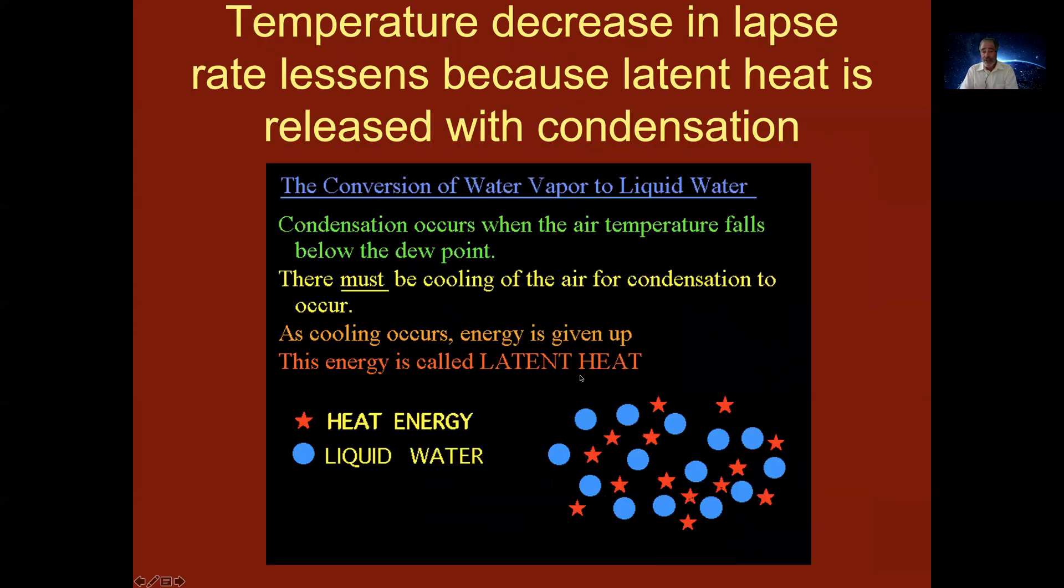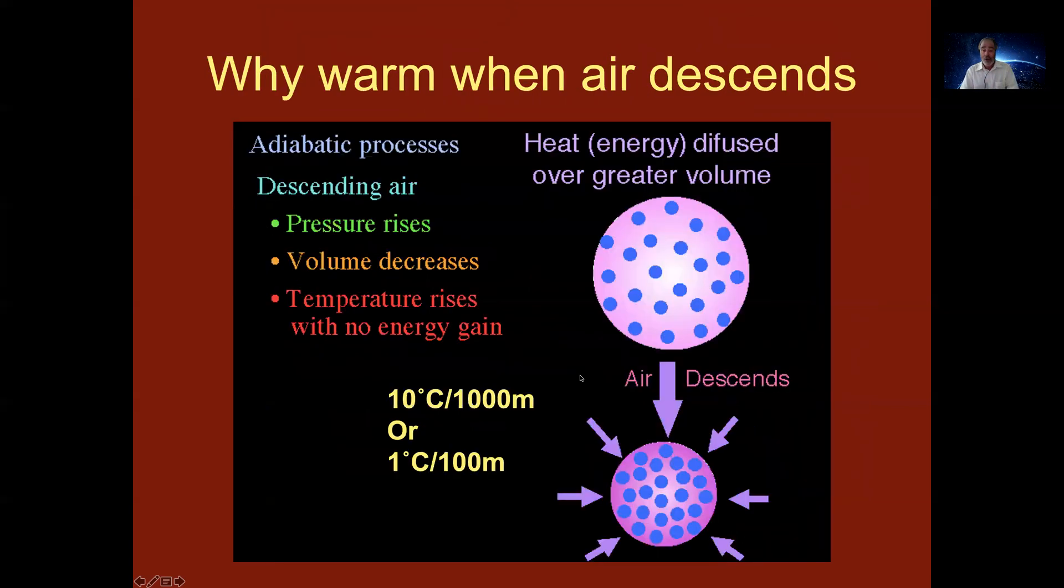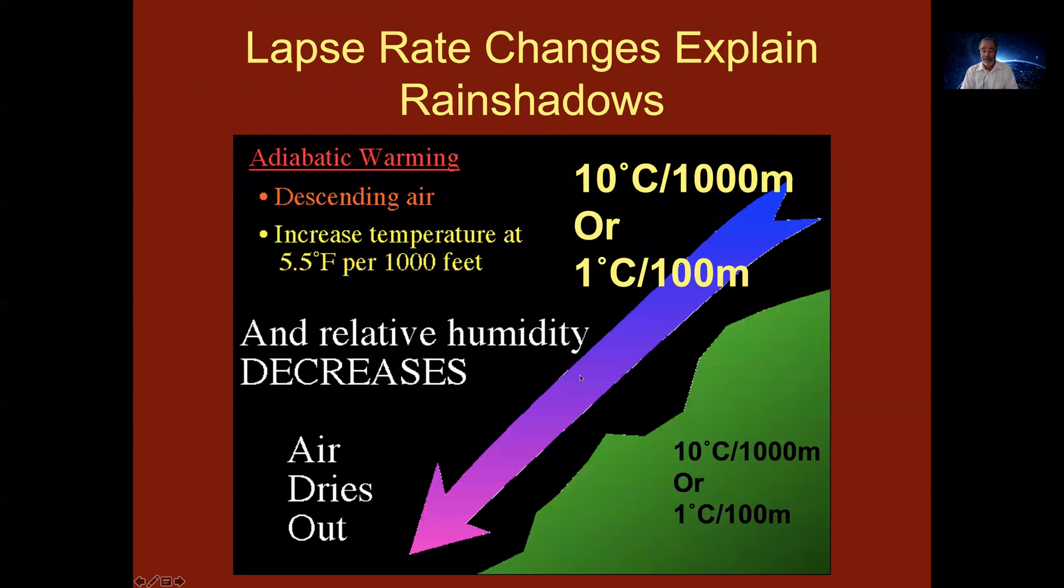So the temperature decrease and lapse rate lessens because latent heat is released with condensation. You're shifting from one degree per hundred meters going up to half degree per hundred meters going up. But when you go back down the lee side, you will always use one degree per hundred meters because there's no condensation that's occurring. As the air descends it warms and it's warming because of the molecular friction at one degree C per hundred meters.